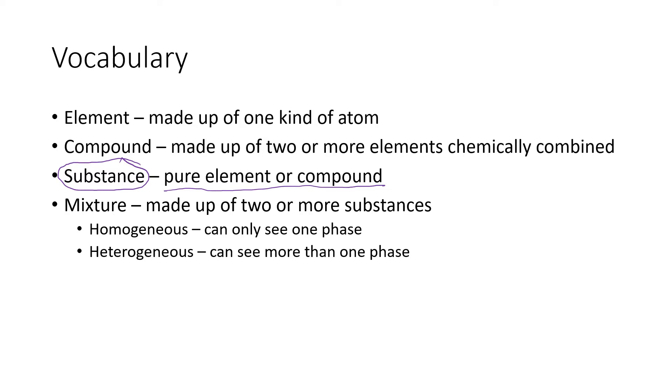And then a mixture is made up of two or more substances combined together. And if it's a homogeneous mixture, you can see only one phase. And chemists usually call these homogeneous mixtures solutions. Solutions can be liquids, like the saline solution that you might use for contact lenses, or they can be other states of matter, such as a solid, like the ring that was shown on the previous page. And then a heterogeneous mixture is one where you can actually see more than one phase present.